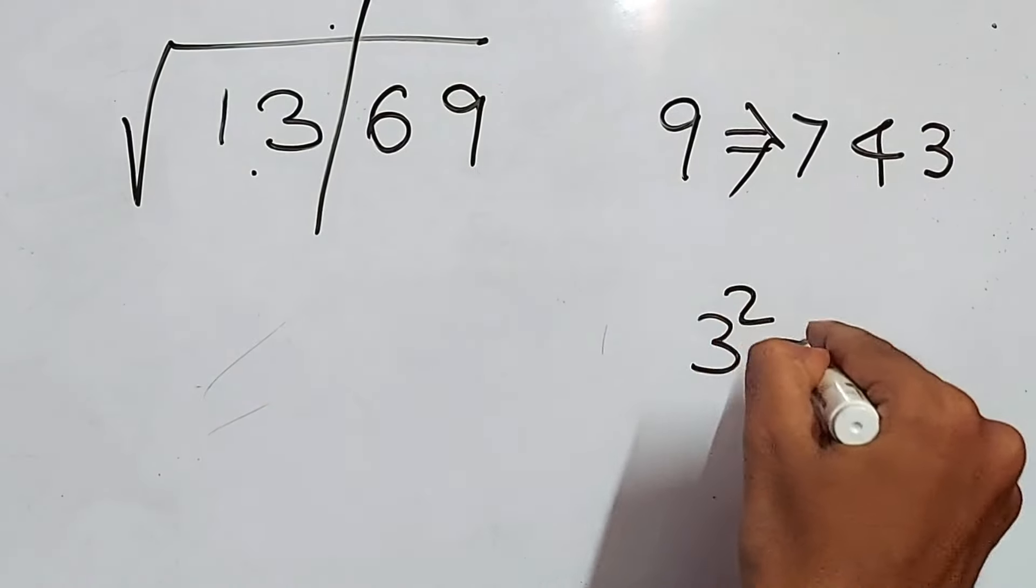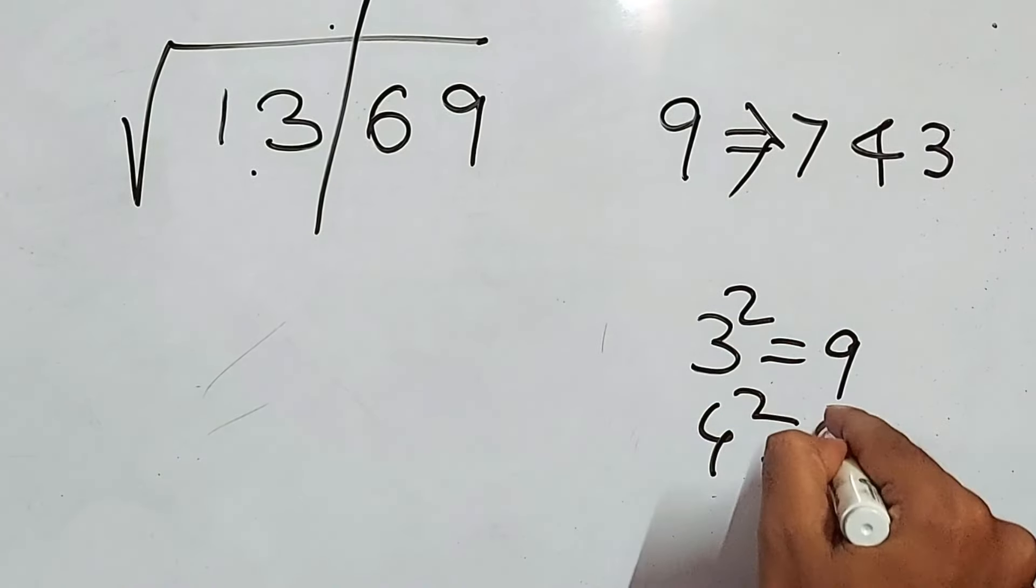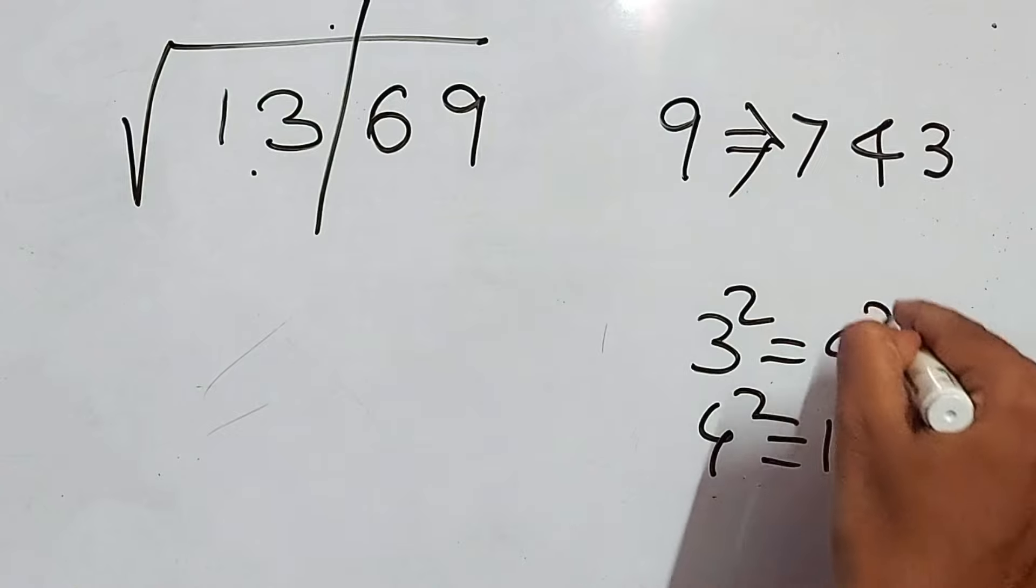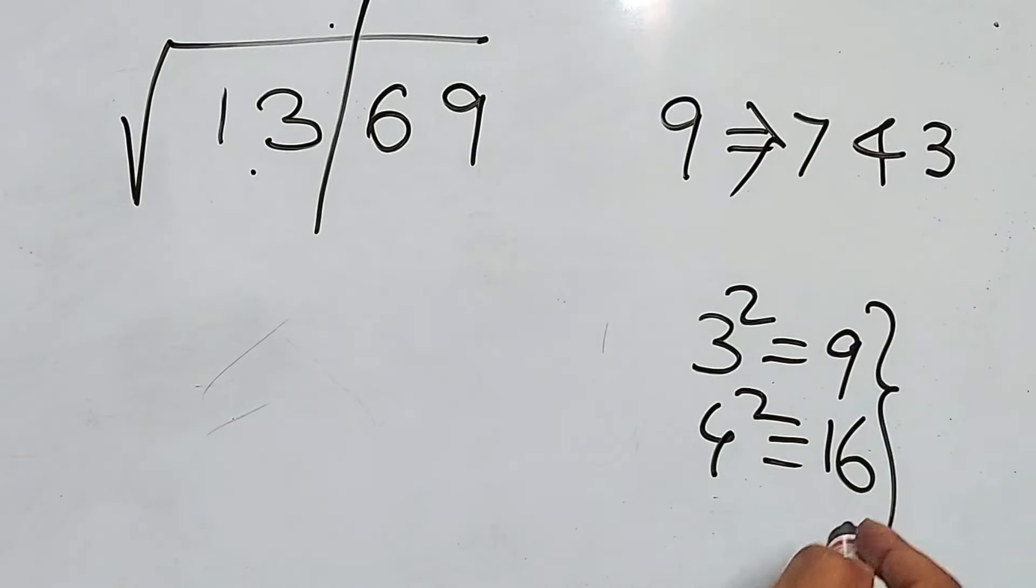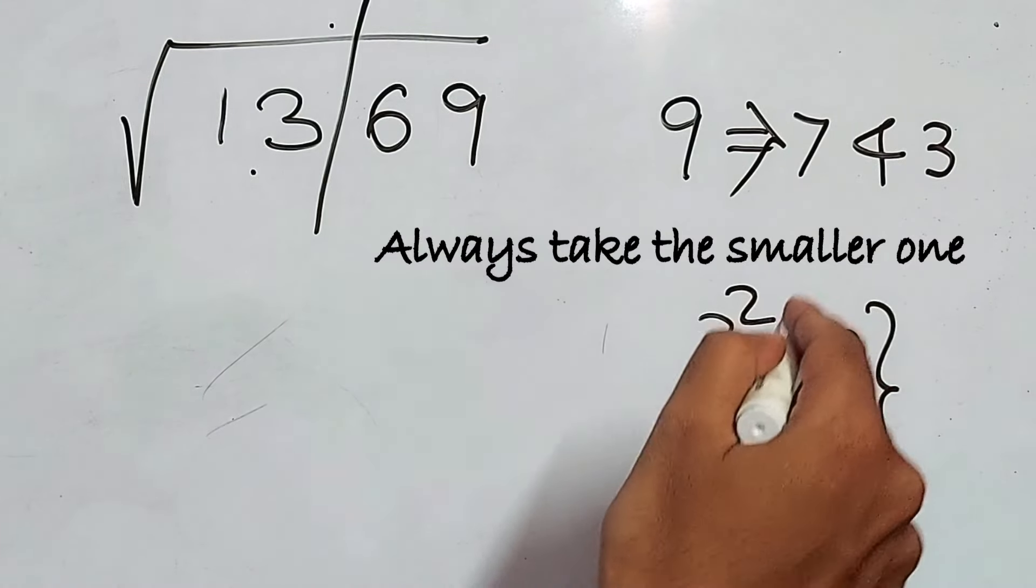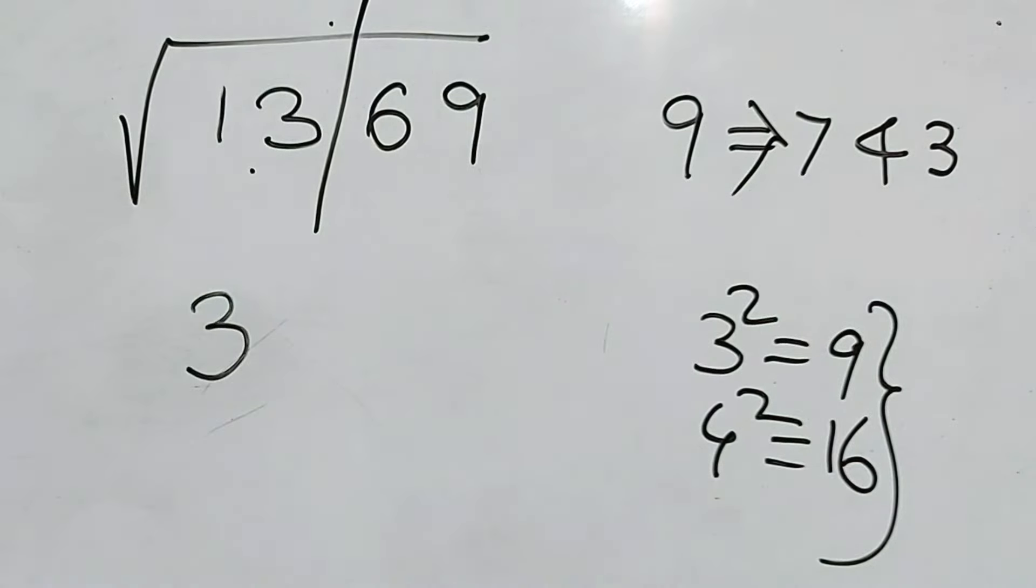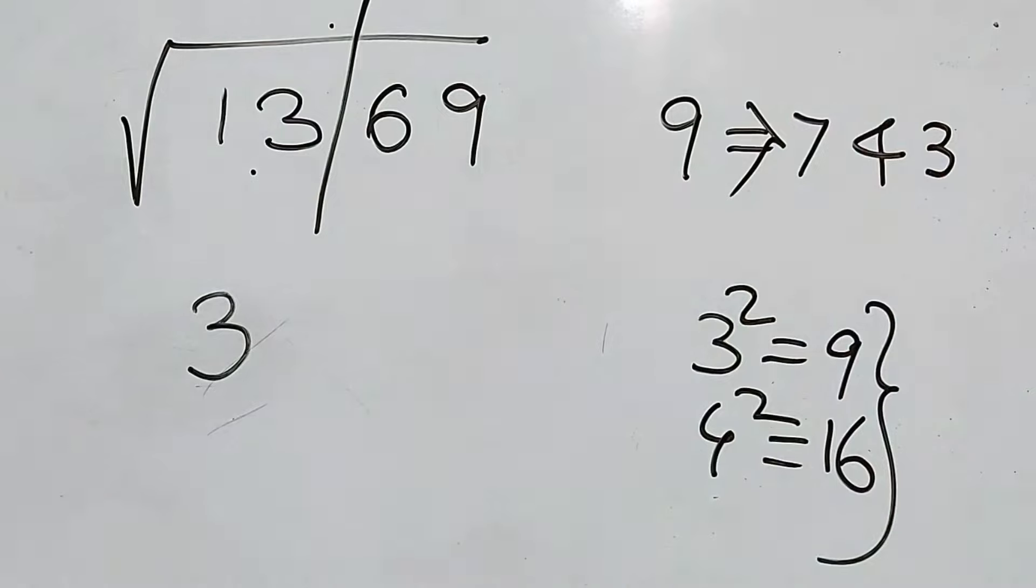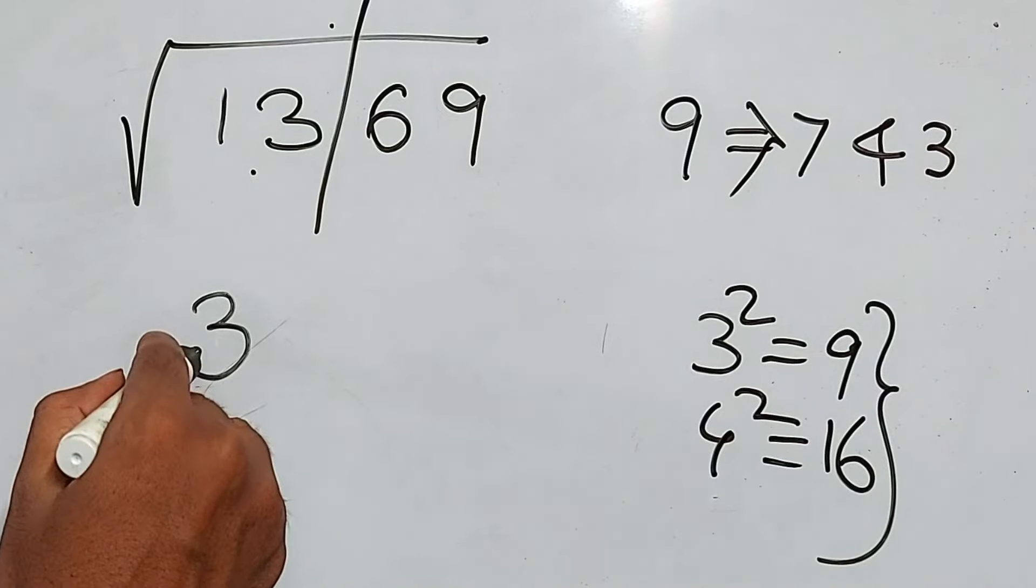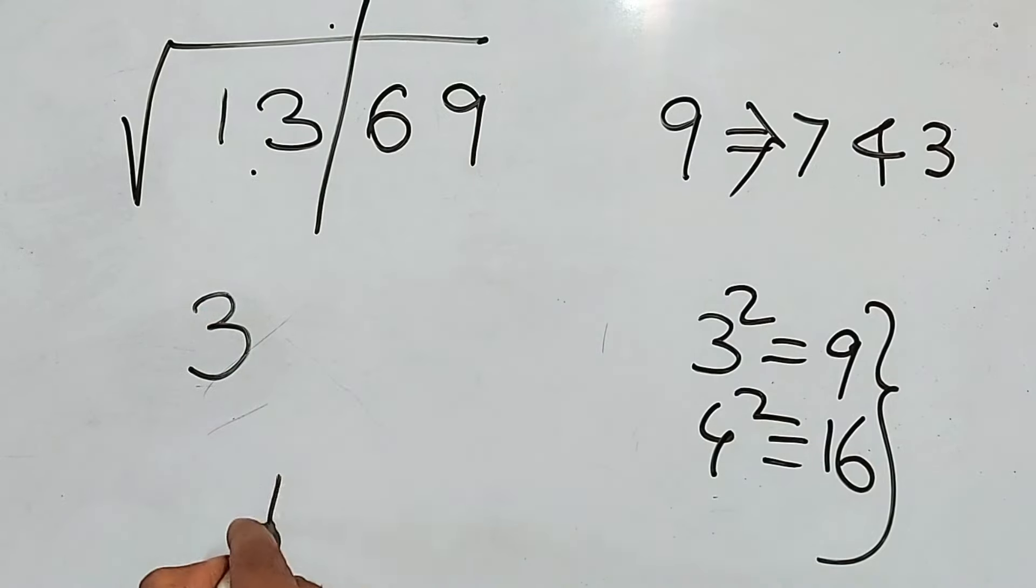Let's work with this 13. 3² is 9 and 4² is 16. So definitely this 13 is in between these two. And always take the smaller one, that is 9. That means we have to take this 3. So first number has to be 3. Now, we have to multiply this 3 with the next number, that is 4. So 3 × 4 is 12.